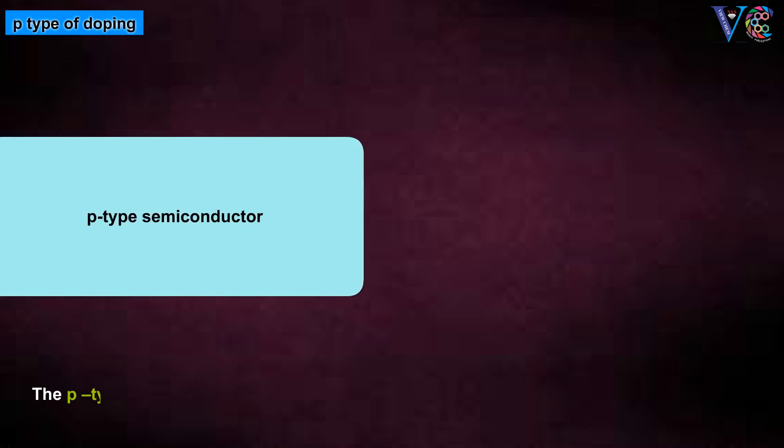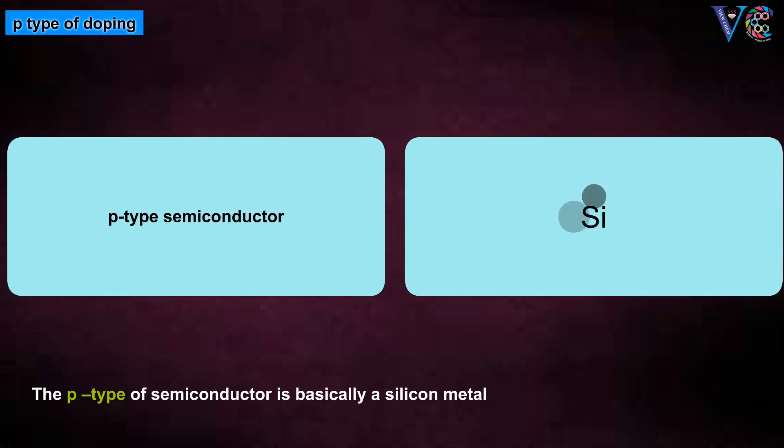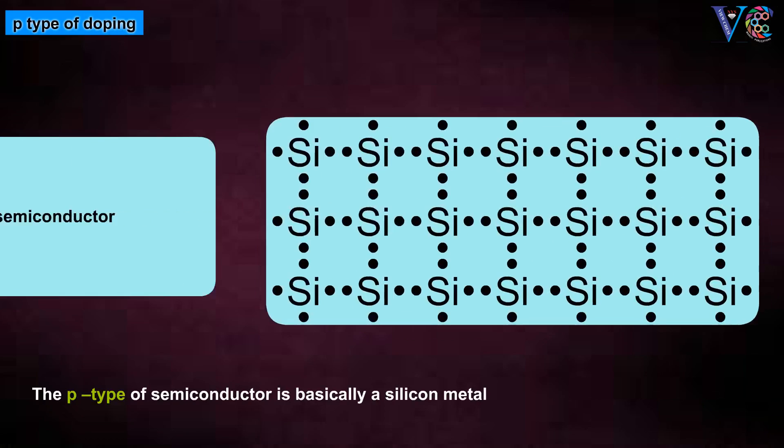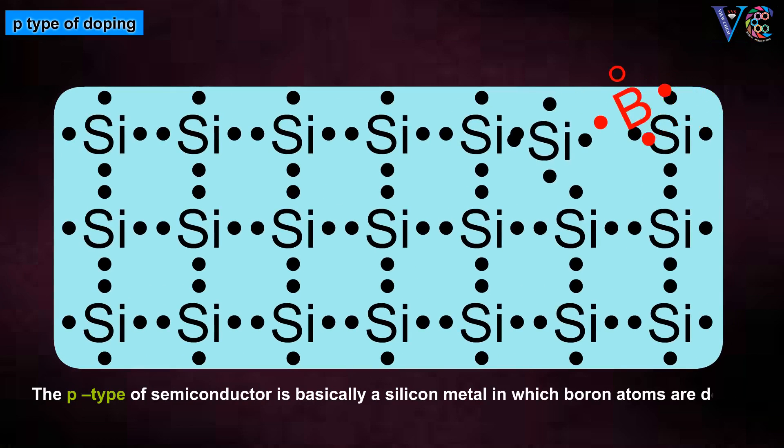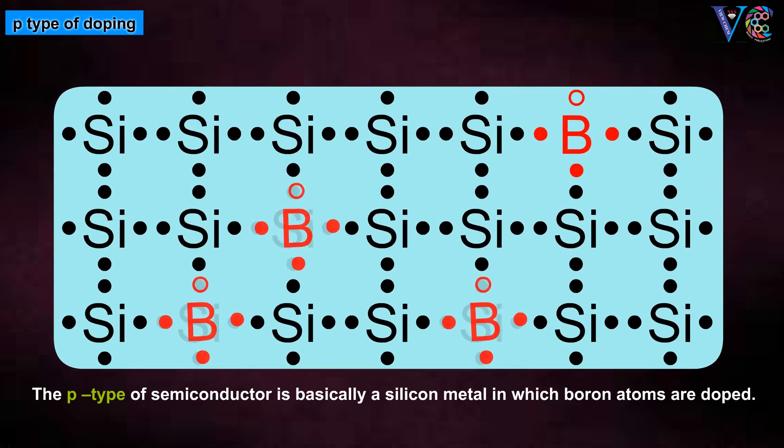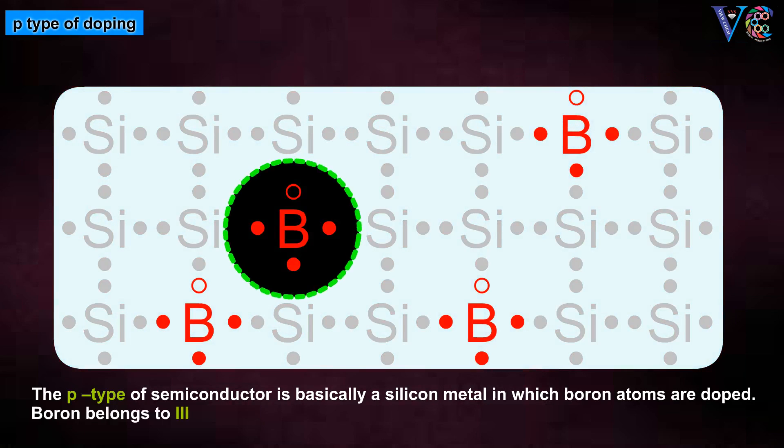P-type of doping. The P-type of semiconductor is basically a silicon metal in which boron atoms are doped. Boron belongs to 3a group. It has 3 valence electrons.